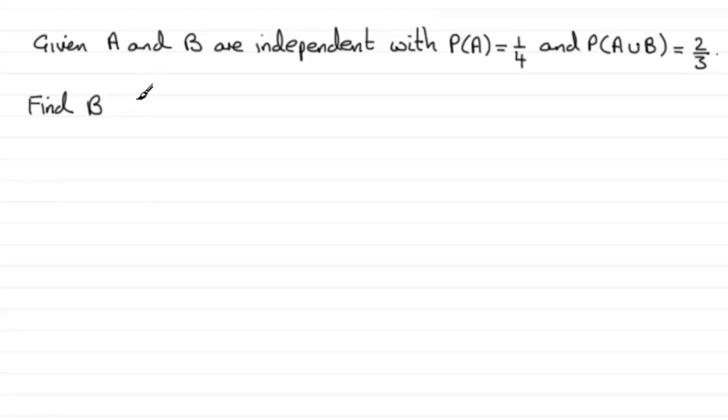Now to do this we need to remember this general rule for the probability of A union B. For the probability of A union B it's the probability of A plus the probability of B minus the probability of A intersecting with B. It's a rule that is always true.